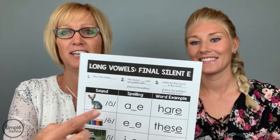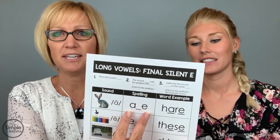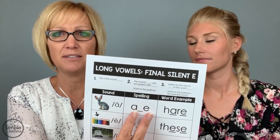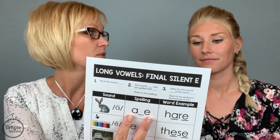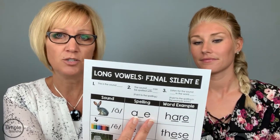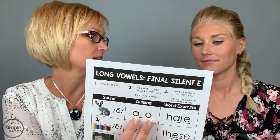All right, final silent E — it's kind of a fun one. When I was taught this as a teacher, I was taught that it was the tickle E. The E jumps over and tickles that vowel and makes it say its name. And that's kind of fun, and it's true — it's what it does. So we have this E over here, and it's going to make this vowel on the other side of a consonant say its name. And then it's too busy, and it doesn't say anything at all.